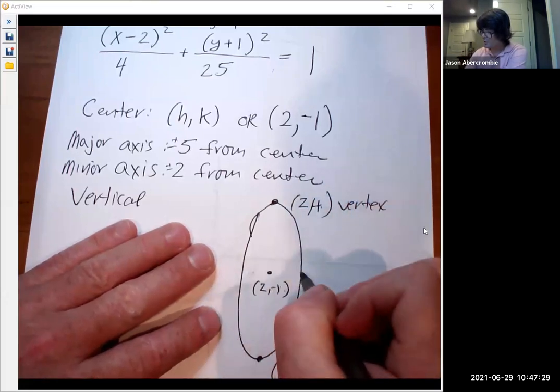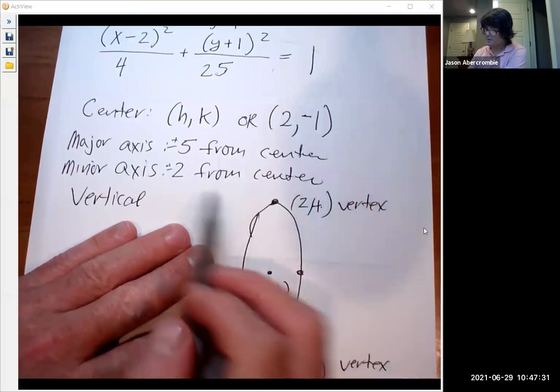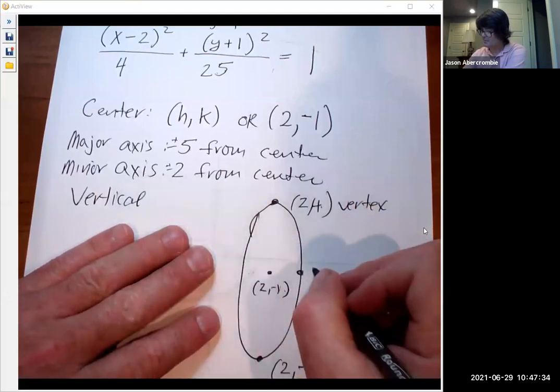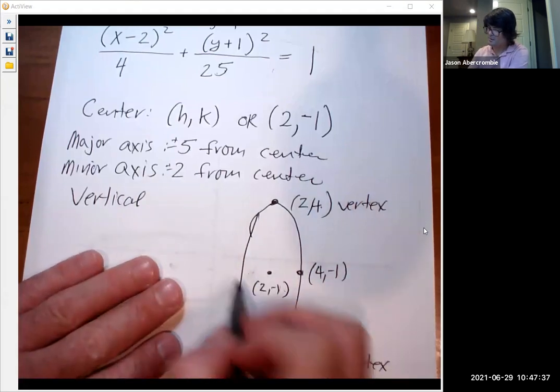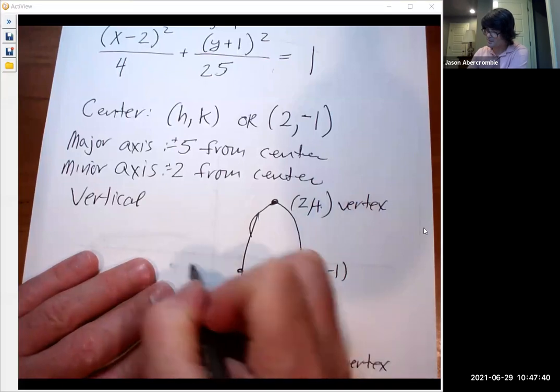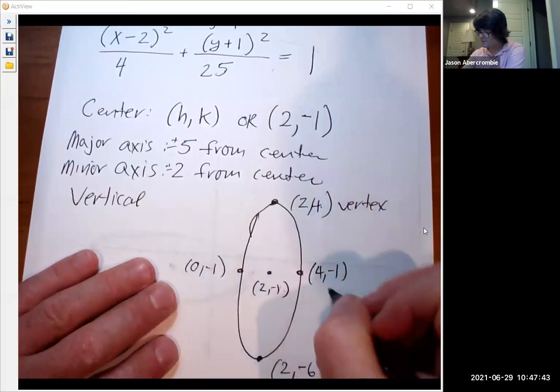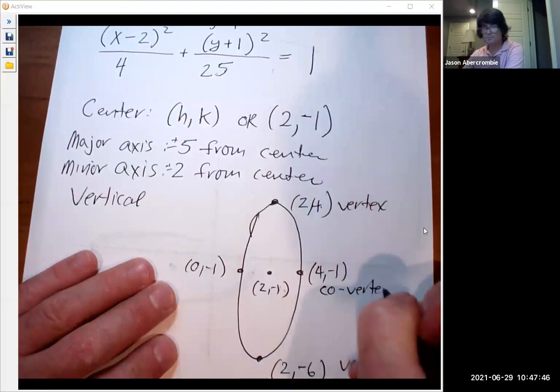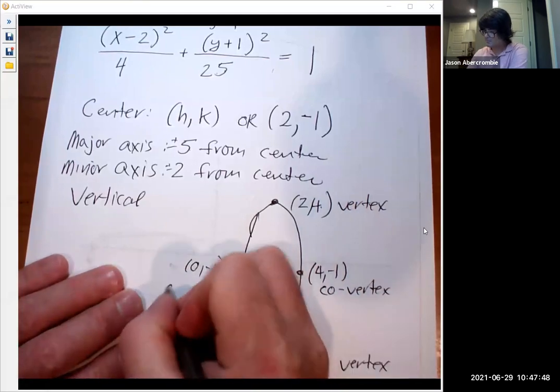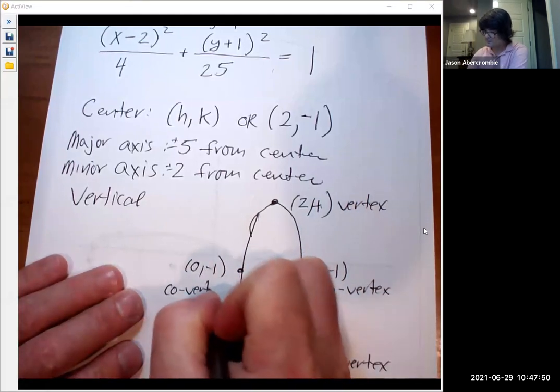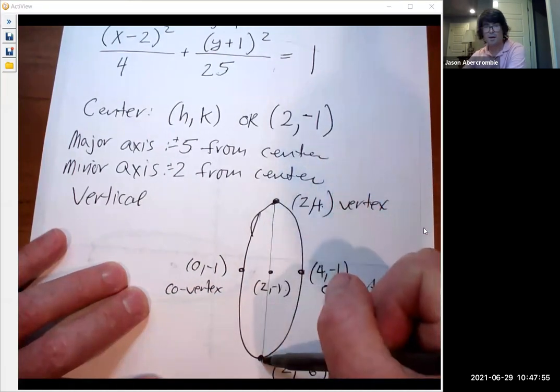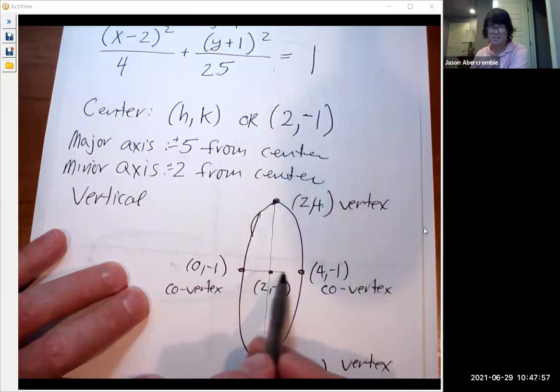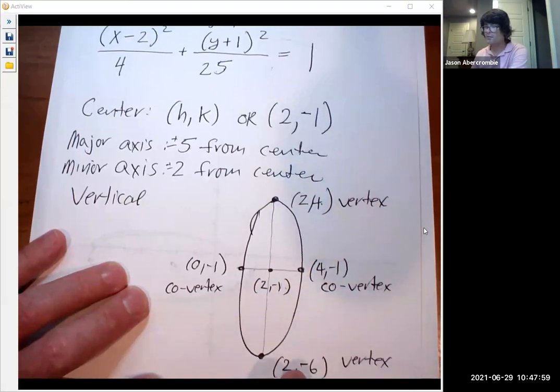And then we're going to go to my co-vertices. The minor axis goes two from center. So that's going to be four negative one. And if we go two left from two, it's going to be zero negative one. This is called a co-vertex. That's a co-vertex. This is the major axis right here, and this is minor axis. So that's kind of what the ellipse is going to look like.